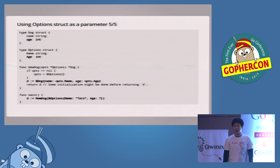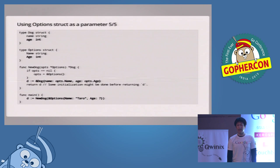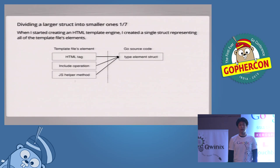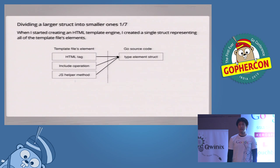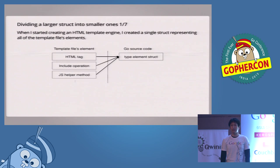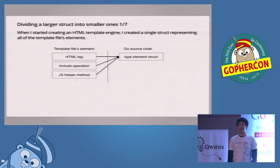Dividing a larger struct into smaller ones is another good way to make a Go package simple and easy to extend. When I started creating an HTML template engine, I created a single struct named element which represented all the template file's elements, such as an HTML tag and an include operation, as this figure shows. This struct became very large because it contained processing for all element types and lost its maintainability. In this example code, the element struct write-to method has a switch block which contains all element type processing, and that made this package enlarged and complex.